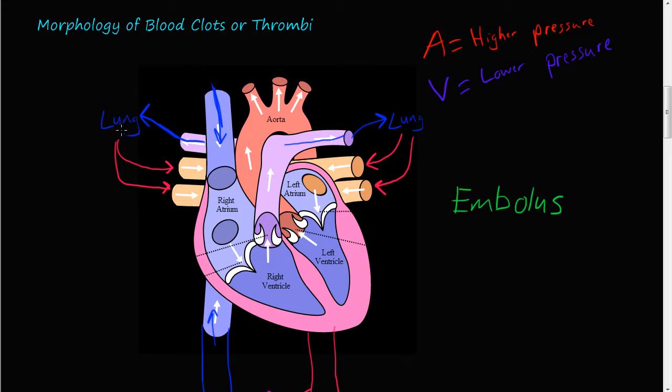Oxygenated blood then comes back through the pulmonary veins into the left atrium. Once the blood is filled into the left ventricle through the bicuspid or mitral valve, then the big left ventricle has the most work to do. It pushes blood up into the aorta and down through the whole body.